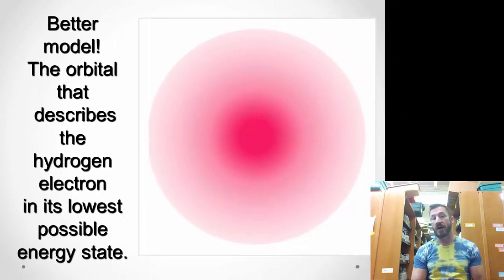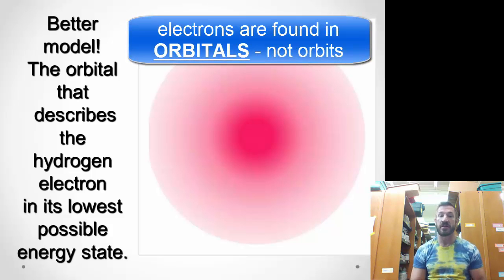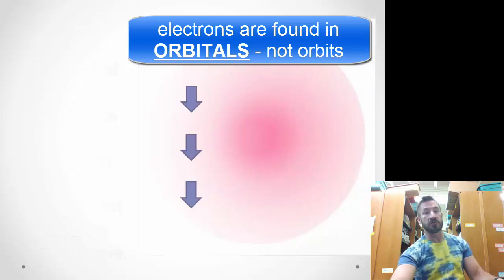A better model, instead of like a circular model, is a three-dimensional area. This is not an orbit, but it's an orbital that describes the hydrogen atom when it's at its lowest possible energy state.